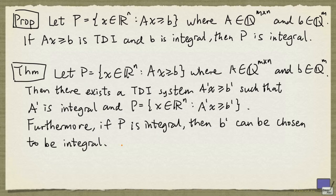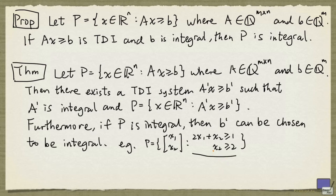The following example shows that the theorem is actually stating something non-trivial. If P is given by the following, one can show that this system is not TDI. But if we add another inequality, it still defines the same polytope, but this system is now TDI. So this theorem does say something non-trivial.